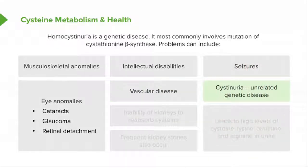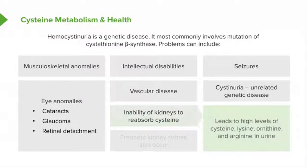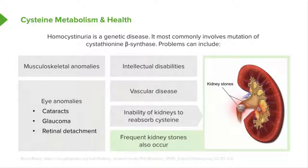Cystinuria is an unrelated genetic disease that has many symptoms that are similar. It involves the inability of the kidneys to reabsorb cysteine. When this happens, we see problems associated with the kidneys, including high levels of cysteine, lysine, ornithine, and arginine appearing in the urine. Because these things are accumulating, kidney stones also develop.